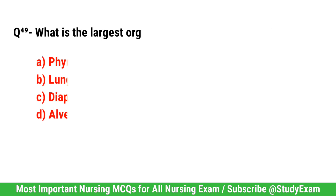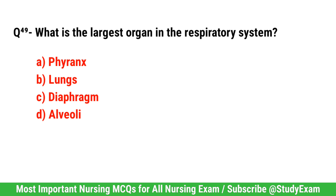Question number 49. What is the largest organ in the respiratory system? Correct option is D. Lungs.